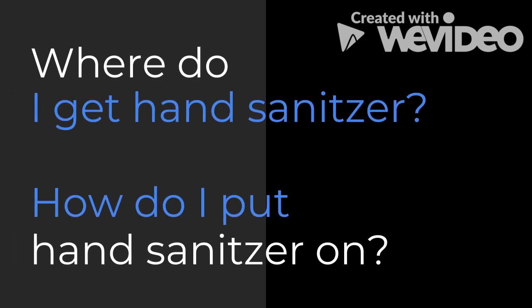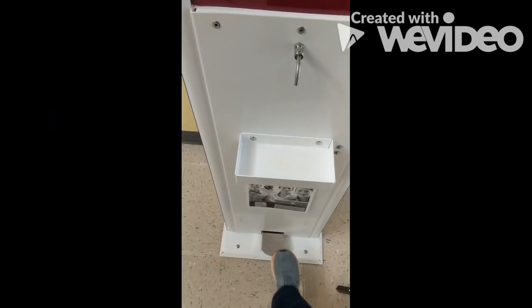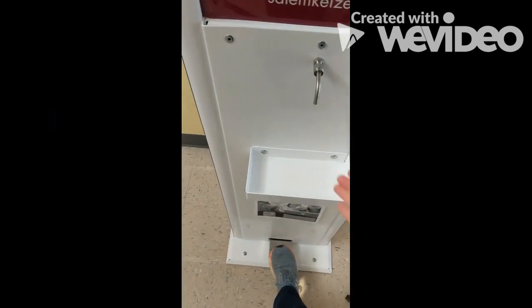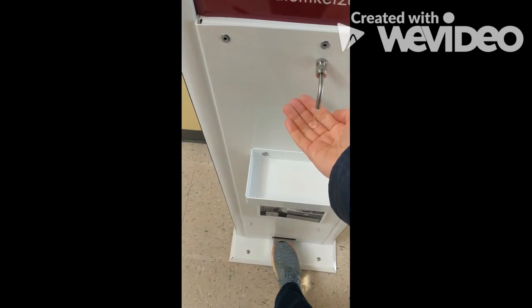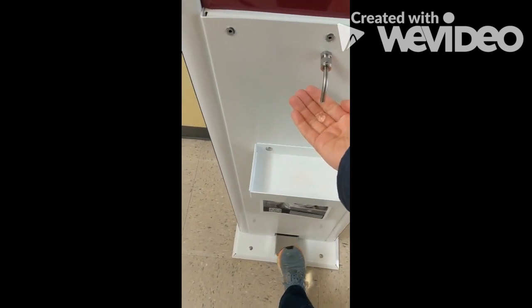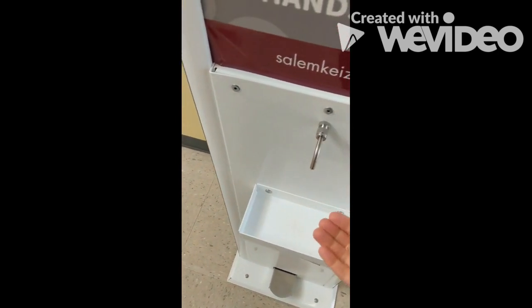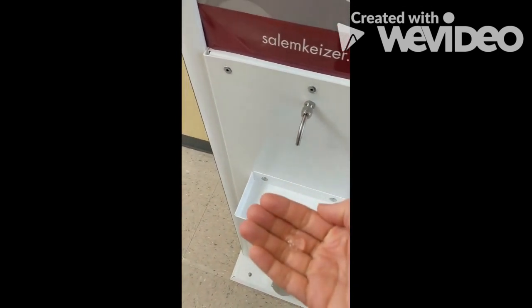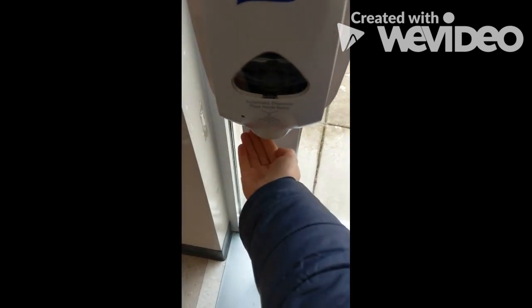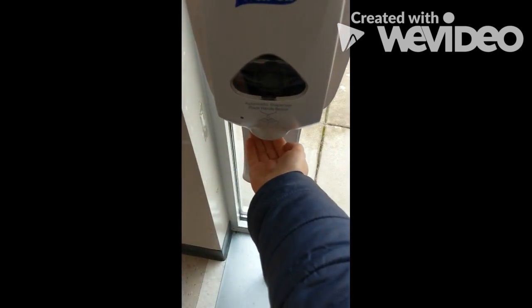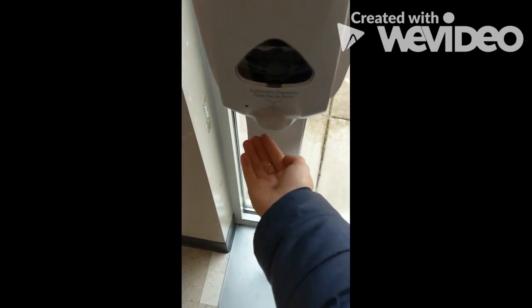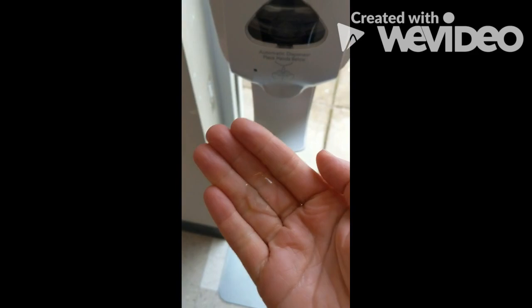Where do I get hand sanitizer and how do I put hand sanitizer on? There are hand sanitizing stations throughout the school. This is one where you step on the metal pedal at the bottom and squirt a small amount into the palm of your hand. This one is automated — stick your hand under and a small amount will be squirted into your hand.